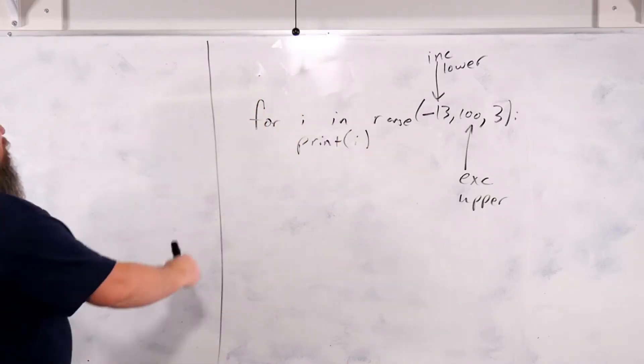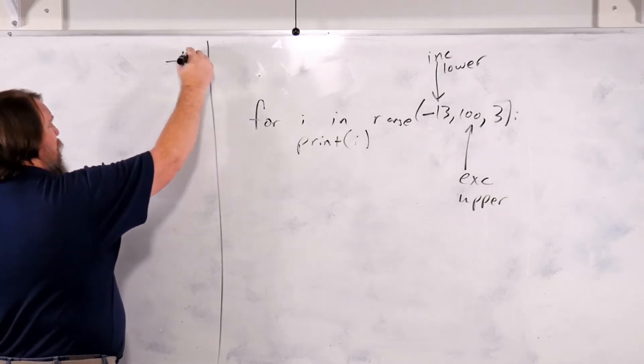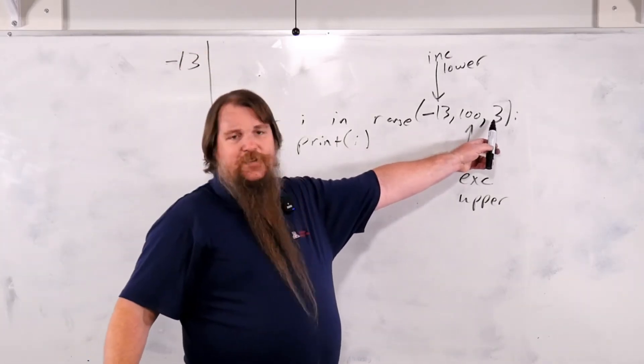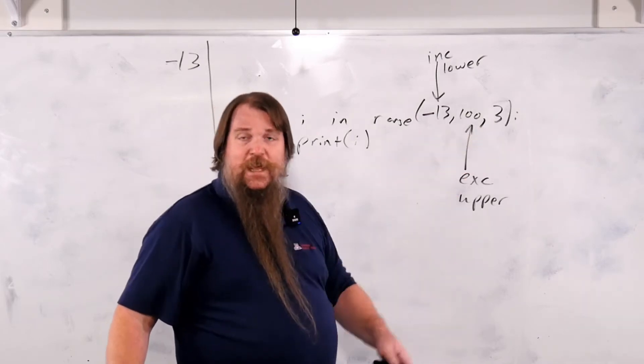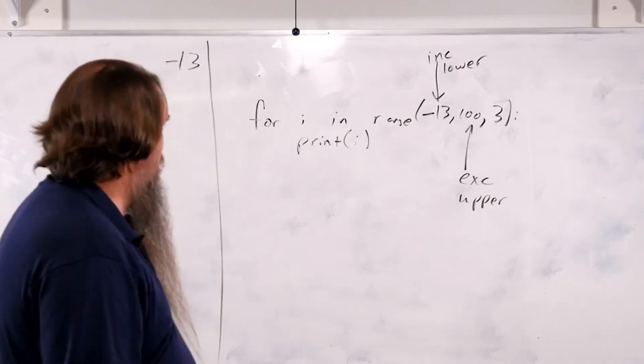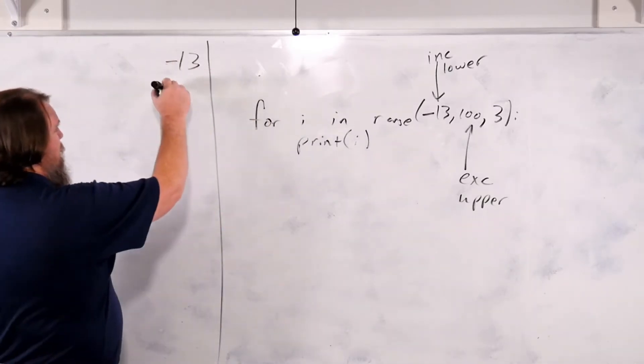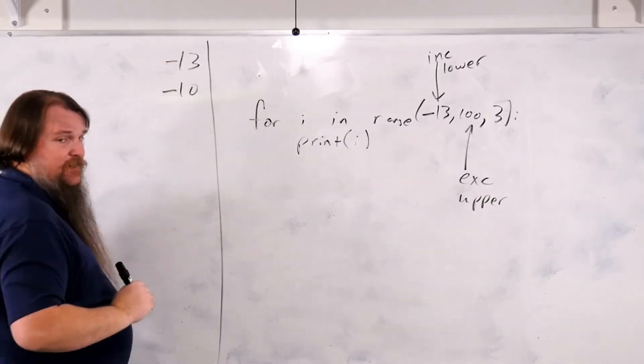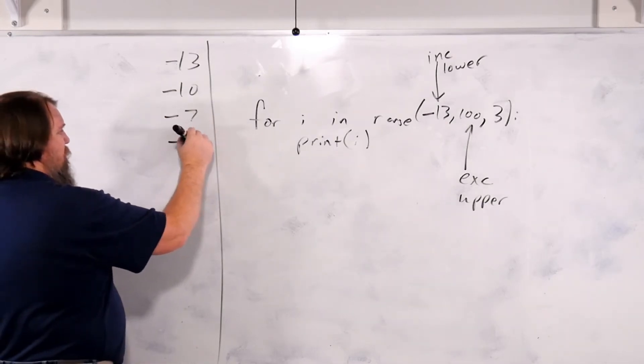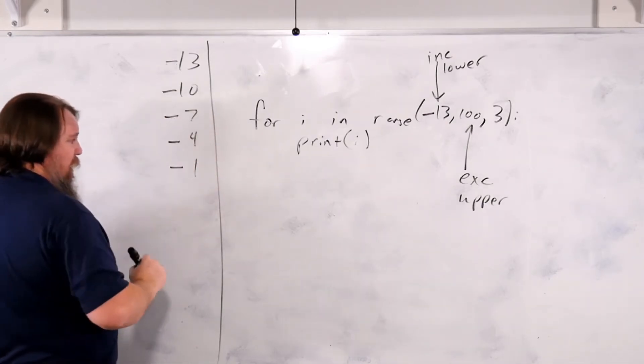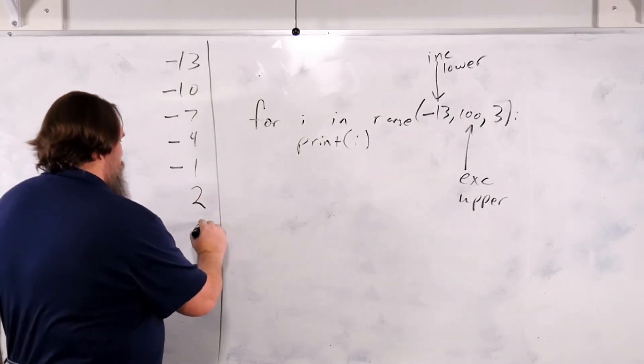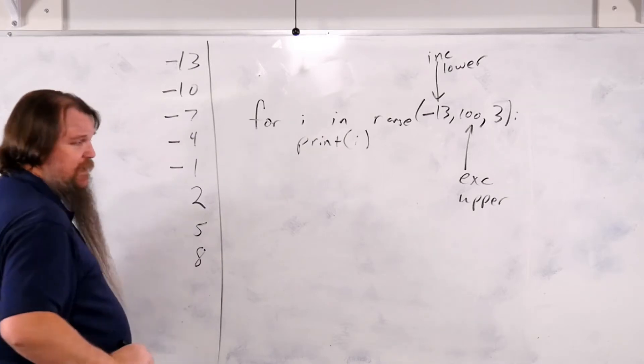We know that on the first iteration of the loop, it would do minus 13. But it doesn't go to minus 12. Instead, what it's going to do is it's going to add 3 to the value. So after minus 13, it's then minus 10. Then it is minus 7, minus 4, minus 1. It of course then goes 2, 5, 8 and so on.